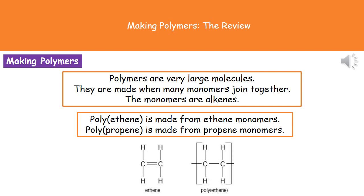They do like this as a 6-mark question. What they're looking for when they ask you to describe polymerization is the fact that we're going to be joining large numbers of monomer molecules together to make a polymer, and that the monomers are alkenes. Those are the key points to remember.